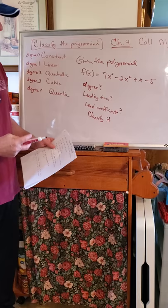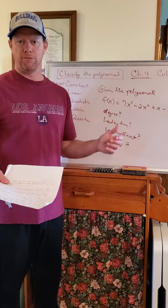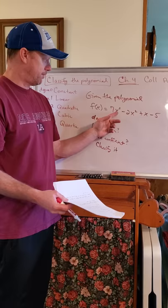All right, so to get the degree of a polynomial, as I said, the degree of a polynomial is whatever the highest exponent term is on your variable. Well, I look at that polynomial, highest exponent is a three. So this is a degree three polynomial.